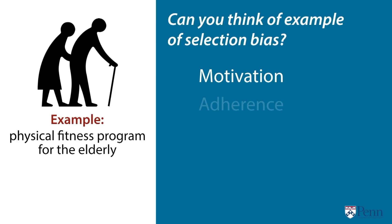Or take another example: adherence. Those more likely to sign up for the program may also be more likely to take their prescribed medications. Or time — maybe those who have time to do the program also have time for other health-driven activities. So instead, if we randomize who gets the exercise program, we can get a valid comparison group and therefore a valid counterfactual.